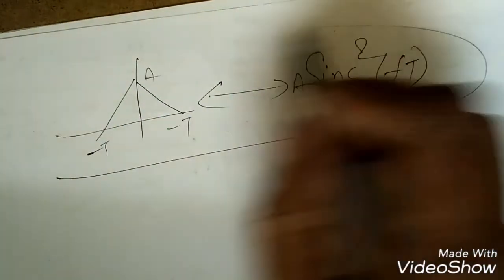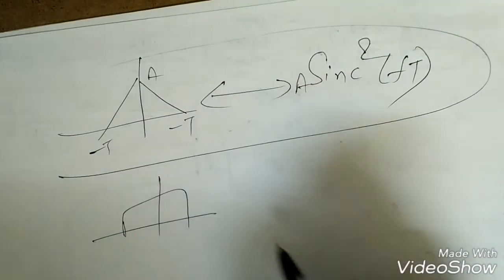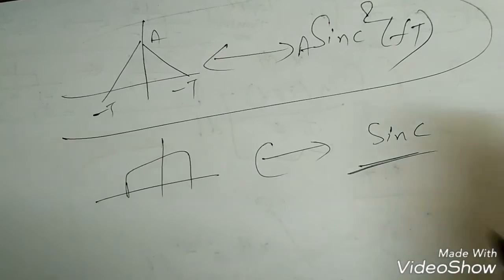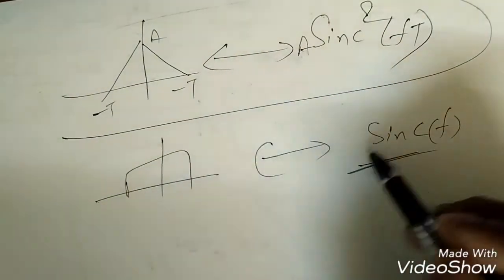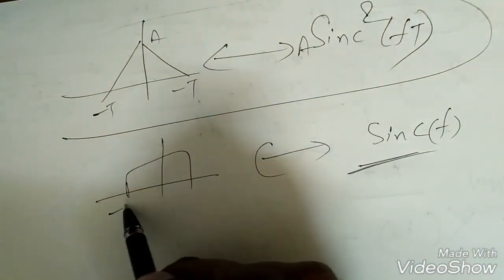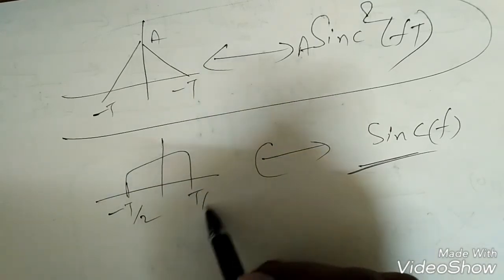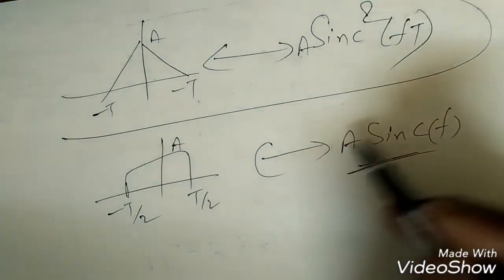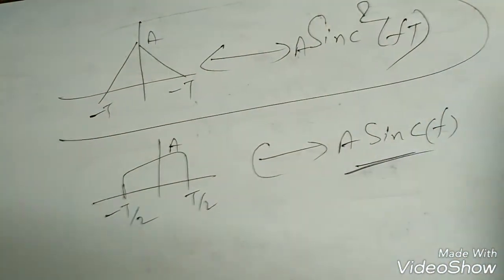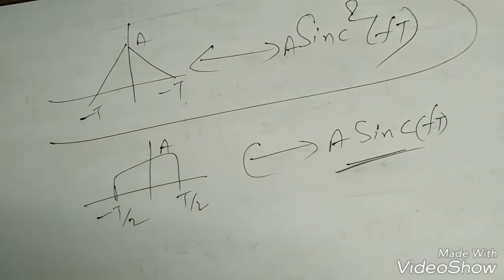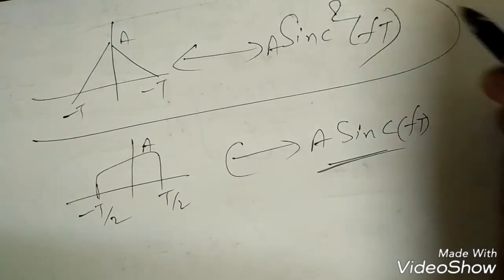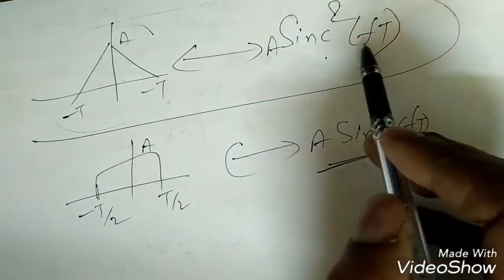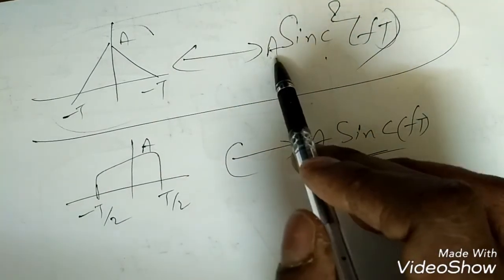Depending on minus T/2 to T/2, you will get sinc square of ft. That is very simple. If there is a triangular we will get a sinc function. Depending on this minus T/2 to T/2 and this should be k, we should get sinc ft times sinc ft. So we have two sinc functions.